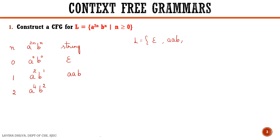When n is equal to 2, it is a raised to power 4 b raised to power 2, so we have four a's followed by two b's. When n is equal to 3, it is a raised to power 6 b raised to power 3, so it will be six a's followed by three b's.